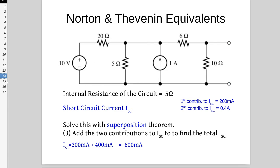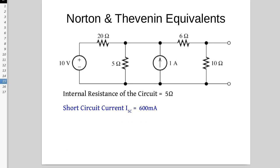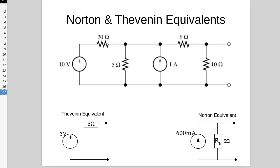Step three: we add the two contributions together — 200 milliamps plus 400 milliamps is 600 milliamps. We already had the internal resistance of the network: 5 ohms. We now have the short circuit current: 600 milliamps. We can calculate the open circuit voltage as 3 volts, and we can put these straight into our Norton and Thevenin equivalents. Either of the two equivalent circuits can be used to replace the complex circuit above — Norton equivalent and Thevenin equivalent circuits, derived using the superposition theorem to analyse the original circuit.